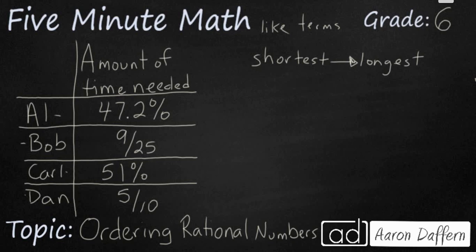Most of the time, the easiest term that you can get things into are decimals. So let's see if we can convert all of these into decimals, because once we do, it's easy for us to order them from shortest to longest.